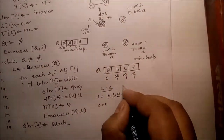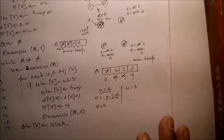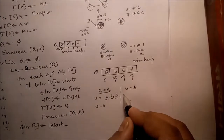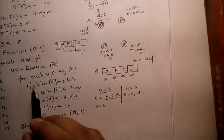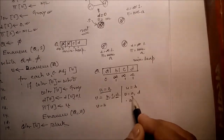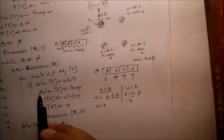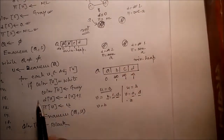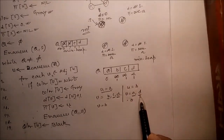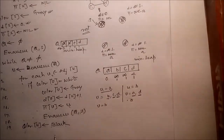For each V adjacent to U: adjacent of B are A and D. Check color of A — it is black, not white, so don't do anything. Check color of D — it is gray, not white, so don't do anything. Two adjacent nodes are exhausted. Make U — which is B — black. Black means processing is finished.